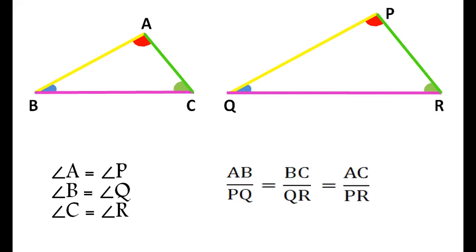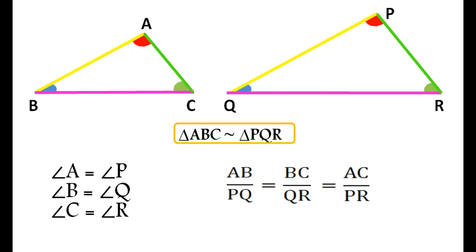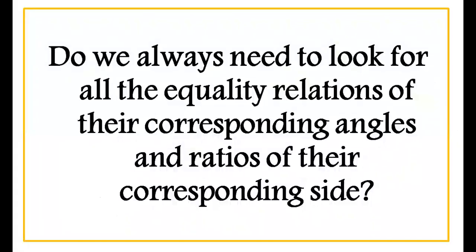Symbolically, we write the similarity of these two triangles as triangle ABC similar to triangle PQR. Now, a natural question arises: do we always need to look for all the equality relations of their corresponding angles and ratios of their corresponding sides? No.